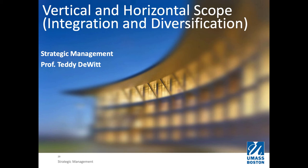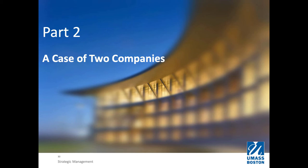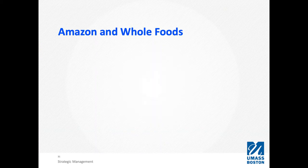Welcome back. Here with Prof D talking about vertical and horizontal scope. Hope you enjoyed part one. In part two, we're going to talk about a case of two companies — Amazon and Whole Foods. I'm going to show you two videos about Amazon and Whole Foods, basically about the acquisition of Whole Foods by Amazon, and I want you to use your prior knowledge from the course and the things you learned from this lecture as you watch the first video.